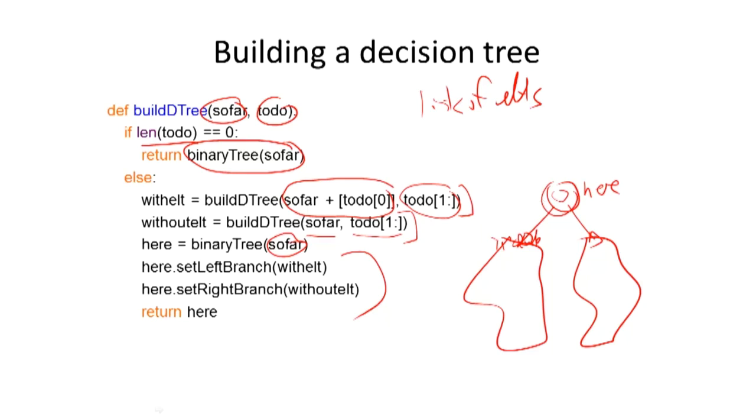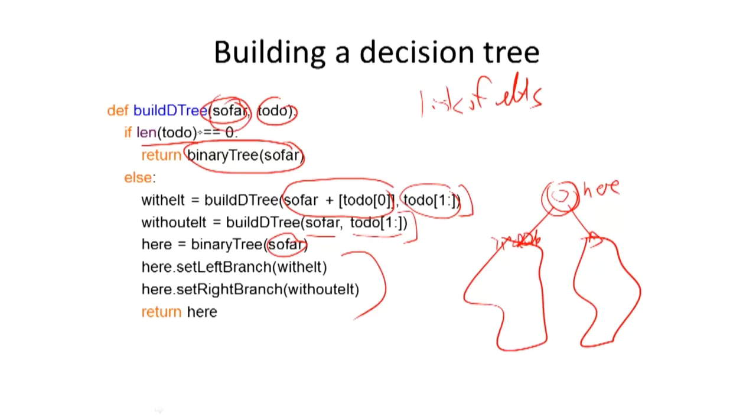These two pieces just set the left and right branch, and then I just return that node. And of course, if that's the root node, I'm done. It's a nice, elegant way of building a tree, just recursively building subtrees where I include an element or don't include an element. The only thing I'm doing here is passing down the information on what elements have I already committed to including at this level in the tree.